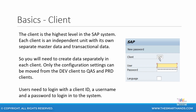It can be made with numbers like 100, 110, 120, 200, 300, 400, and so on. These clients are individual units, independent with their own separate master data and transaction data. Hence, you cannot copy the master data and transaction data from one client to another client unless you do an entire client copy.